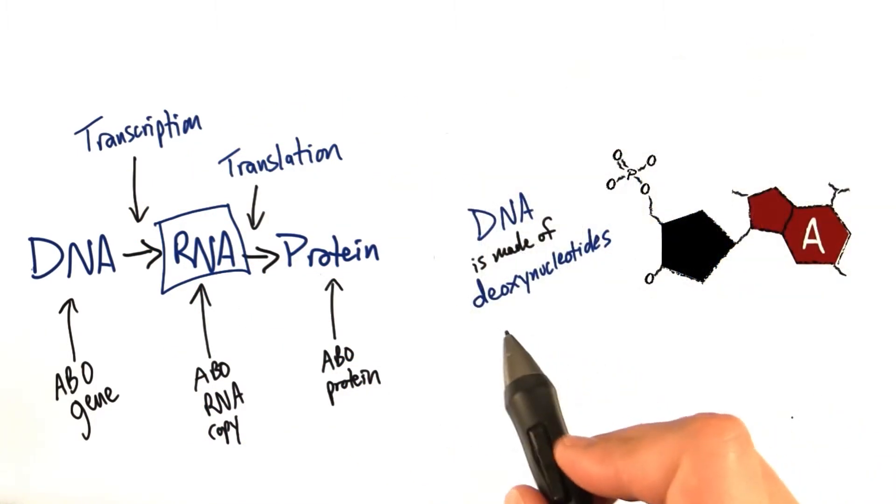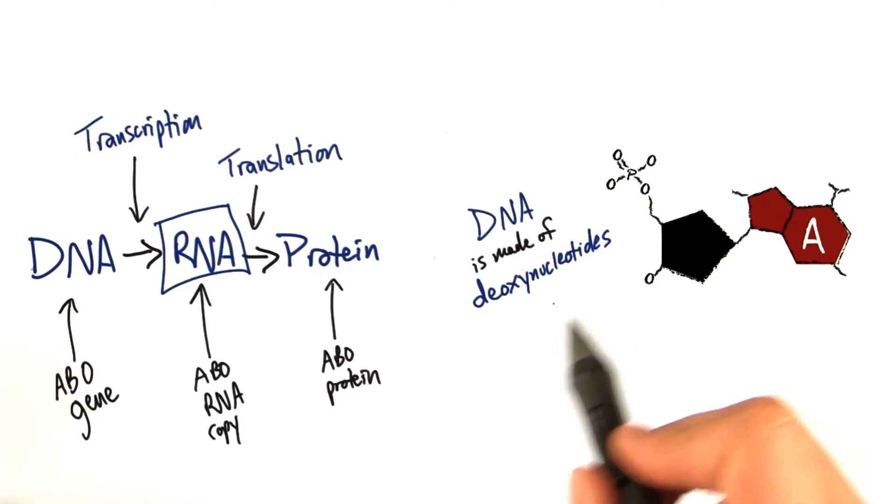You'll remember from lesson two that DNA is made of deoxynucleotides. And that's what I'm showing you here. This is the chemical structure we looked at when we studied deoxynucleotides. And in this case, there's an adenine, or an A, as the nitrogenous base that's attached.